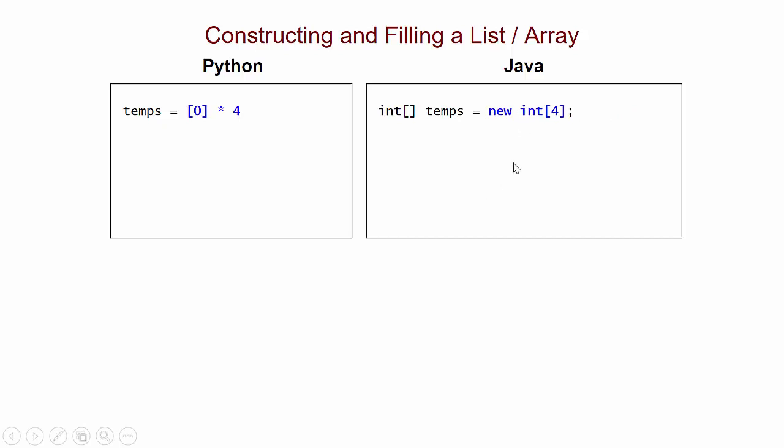And because I want to emphasize the key components, I've got the general pattern down here in blue. So we begin with the keyword new. We always need to use that new operator when we're constructing a new object. And that's what we're doing here. Then we have the type of the elements.